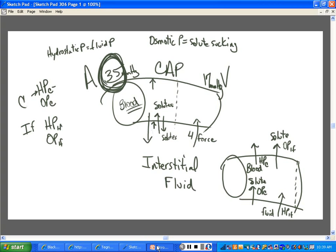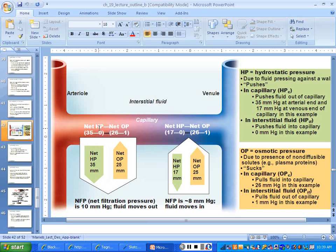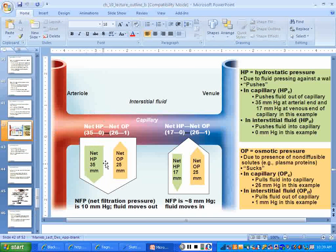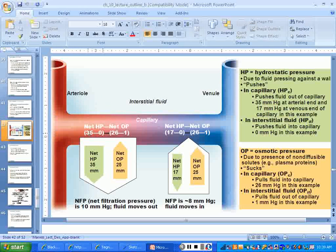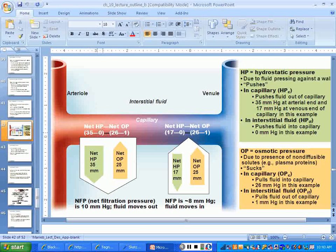So since they are telling us that this other hydrostatic pressure is zero, what is the other hydrostatic pressure on this side called? The hydrostatic pressure of the what? See, this one's the blood, the capillary hydrostatic. So what's this one?